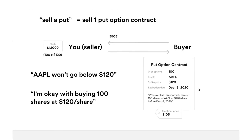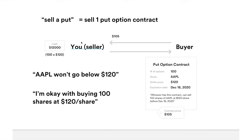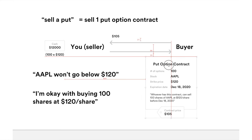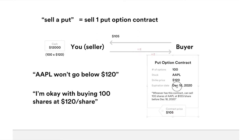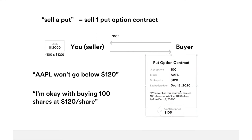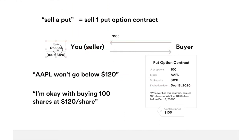Since we're talking about selling put options, you are the seller in this case. In order to write a put option contract and give it to the buyer, you will need to have $12,000 — 100 times 120. Why? Because in case the buyer decides to exercise this contract and sell 100 shares of Apple at $120, they're going to sell it to you. So you have to use this money to buy 100 shares from the buyer.